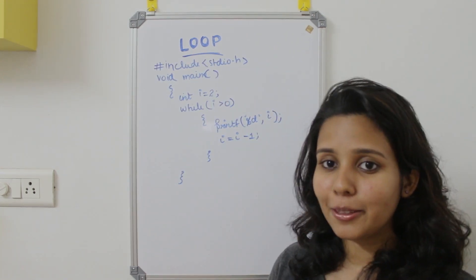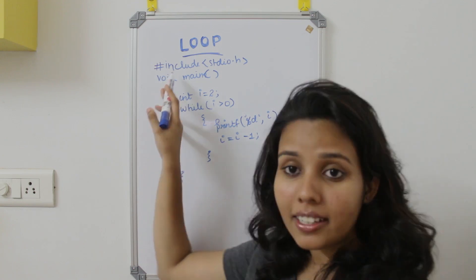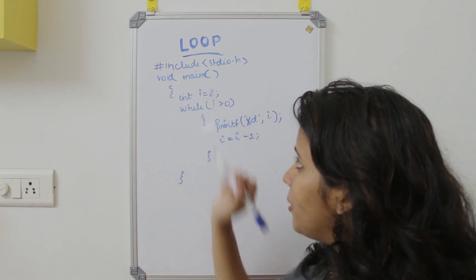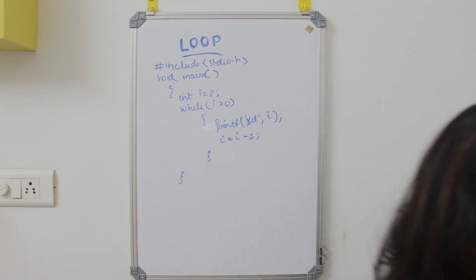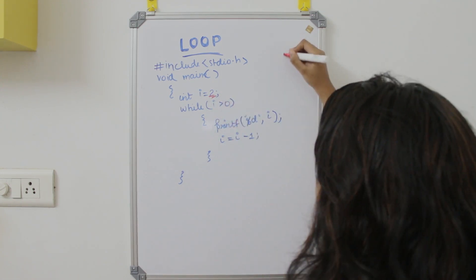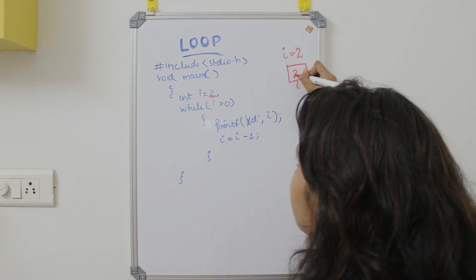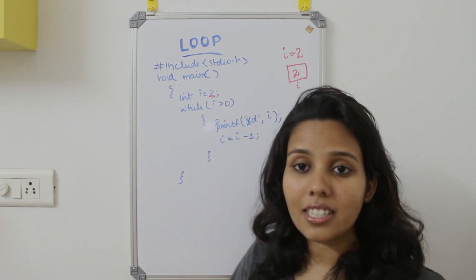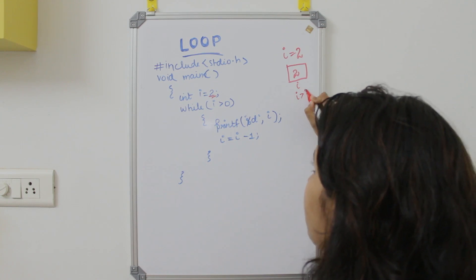Now, how does this program work? We have to write hash include and main. We will declare variable i and write the value 2. That variable i has value 2 stored in a memory location. Now we will check the condition: i greater than 0. Since i is 2, i greater than 0 is true.